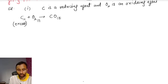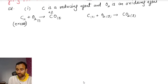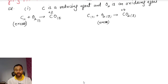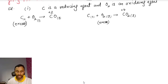In CO, the oxidation state of carbon is plus 2. But in the same reaction, carbon and oxygen giving CO₂, if O₂ is in excess, then we get CO₂, and the oxidation number of carbon is plus 4.